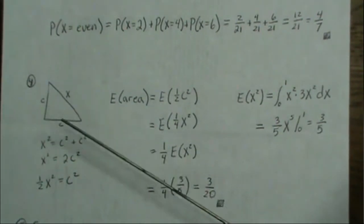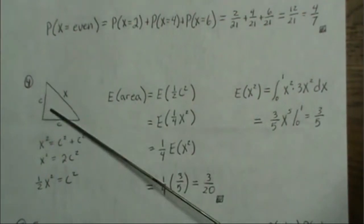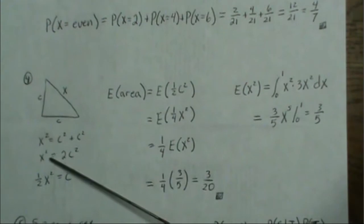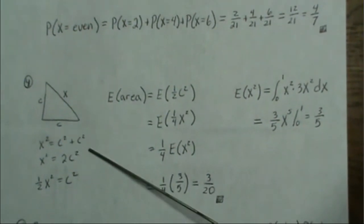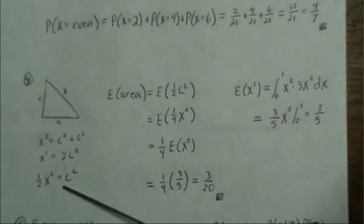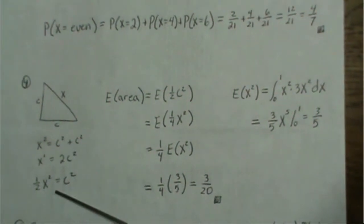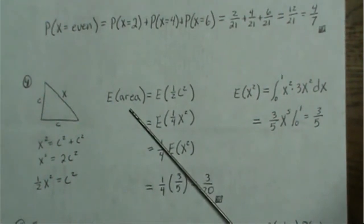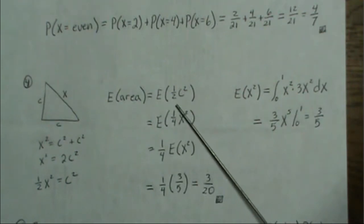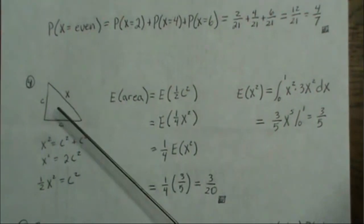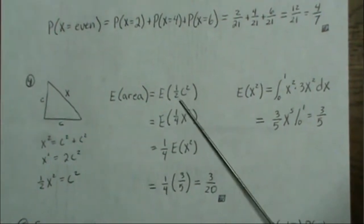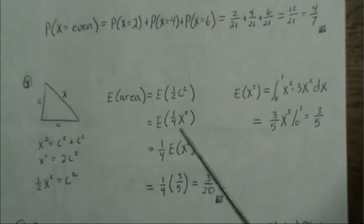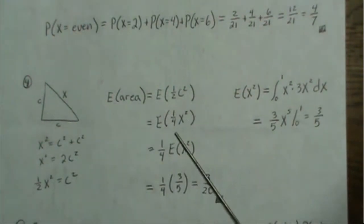An isosceles right triangle has a right angle with the two legs equal. Using the Pythagorean theorem, x squared equals c squared plus c squared, so c squared equals one half x squared. The area is one half times base times height, which is one half c squared. Substituting, c squared equals one half x squared, so the area equals one fourth x squared.